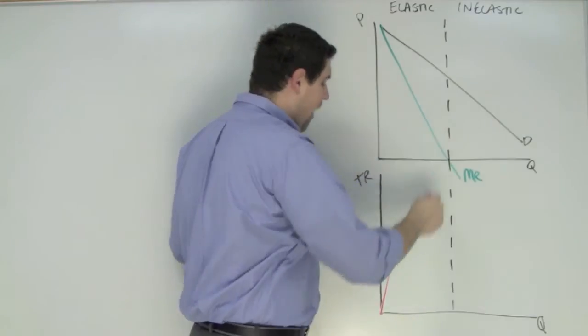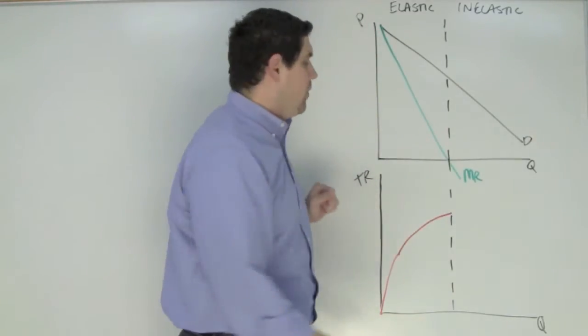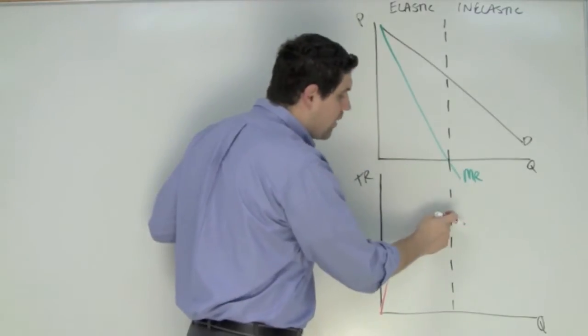As the marginal revenue is falling the total revenue is going to be going up but by less and less. Eventually when the MR hits zero the total revenue is going to hit a peak.